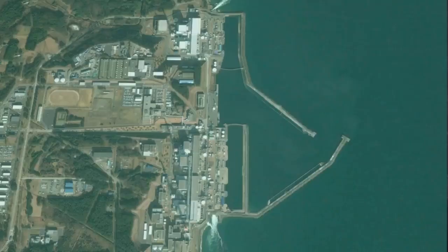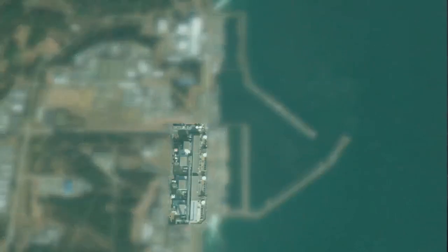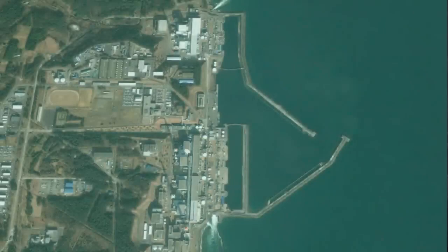The reactors on site were in two groups. The first one looking at the station from the sea contains Units 4, 3, 2 and 1 going from left to right. The rightmost group contains Units 5 and 6.